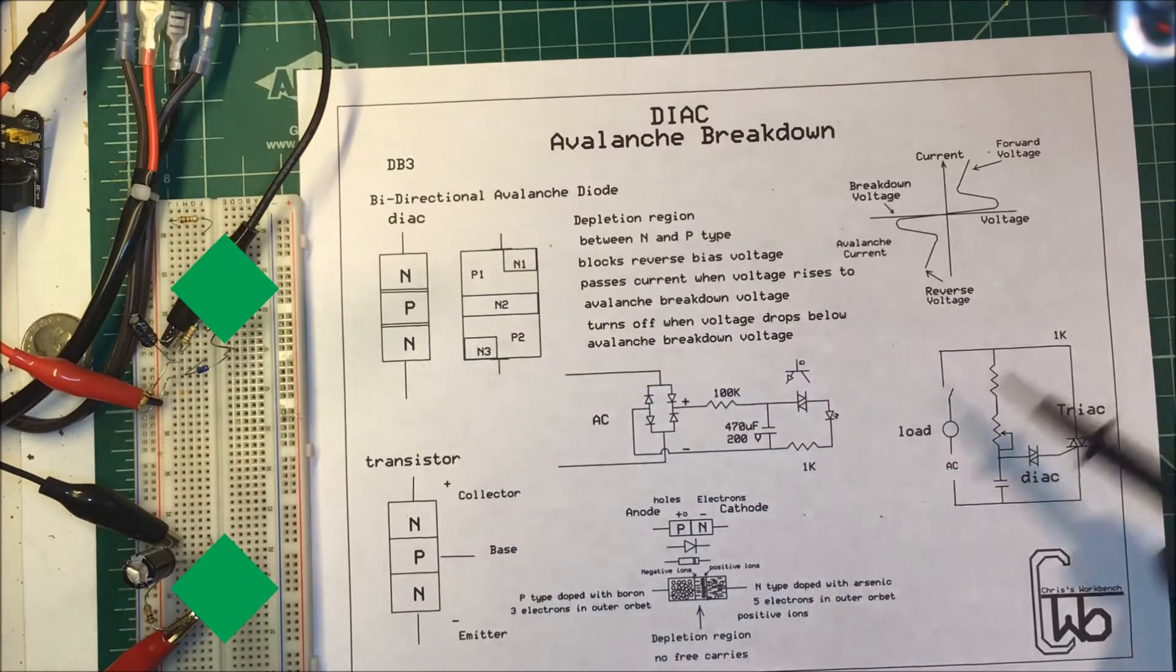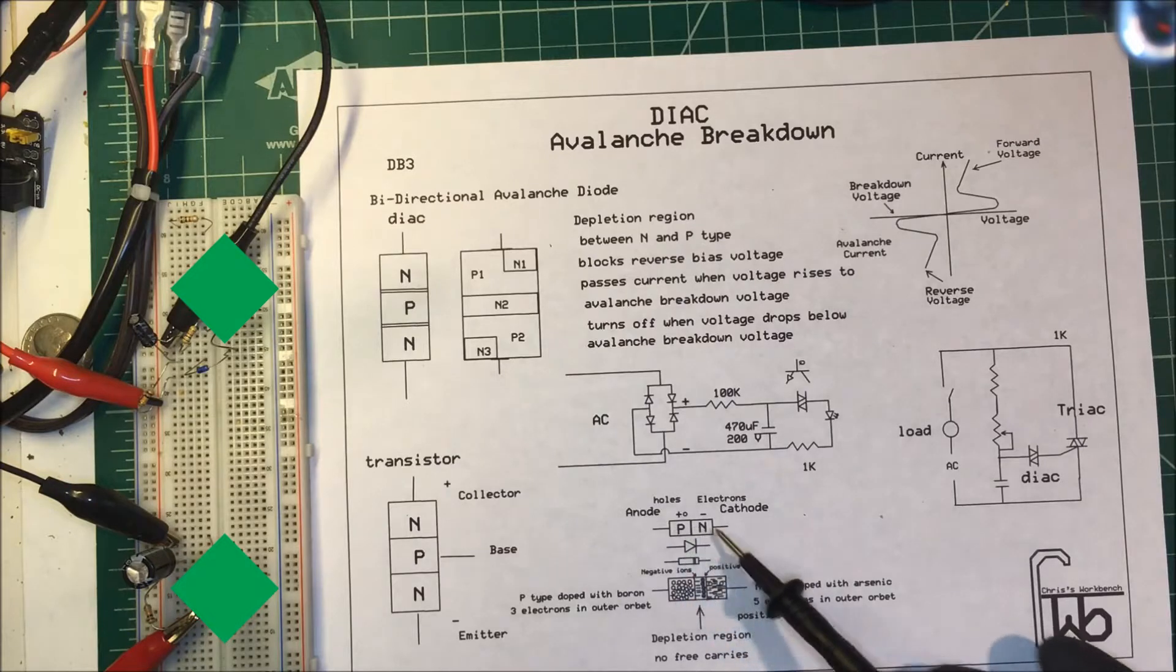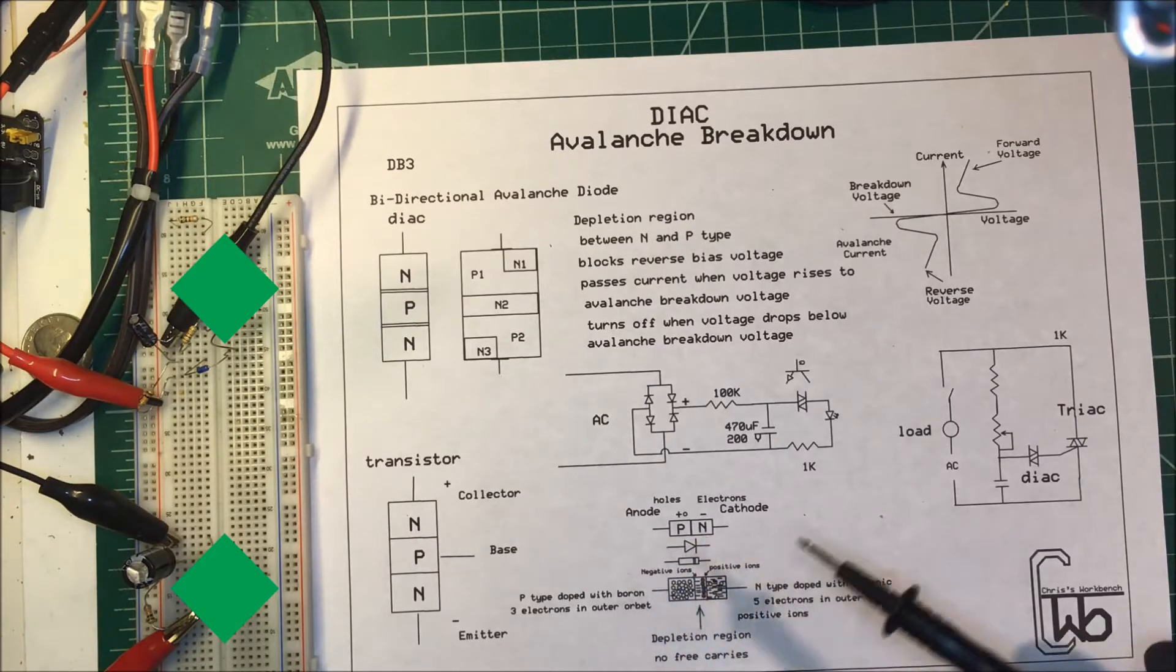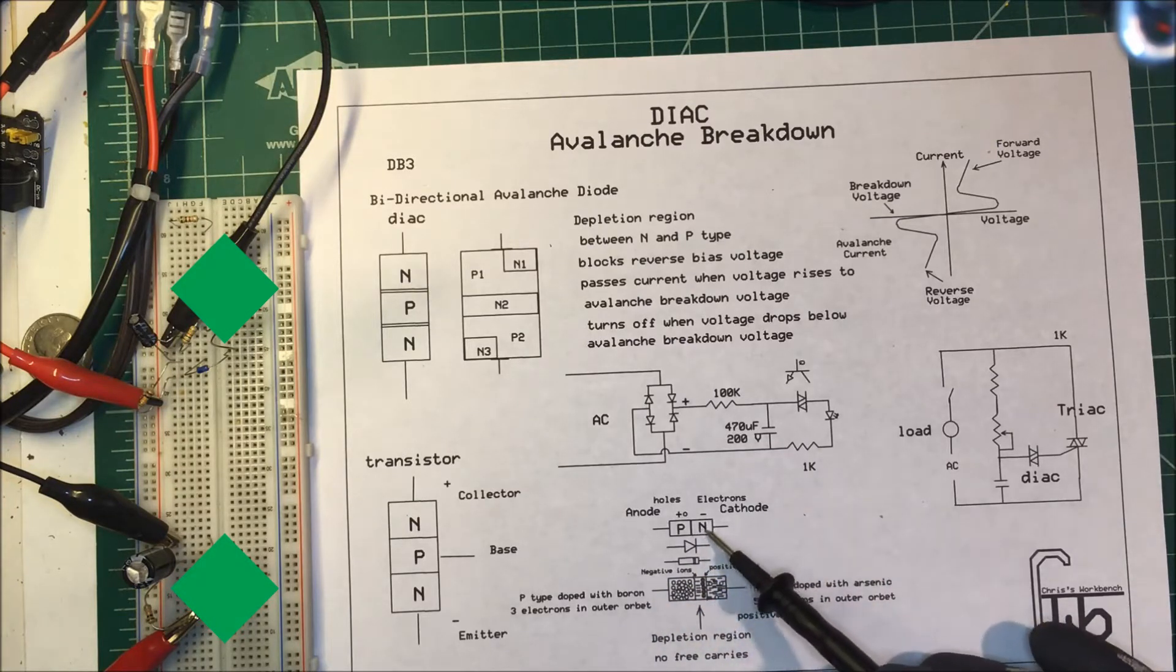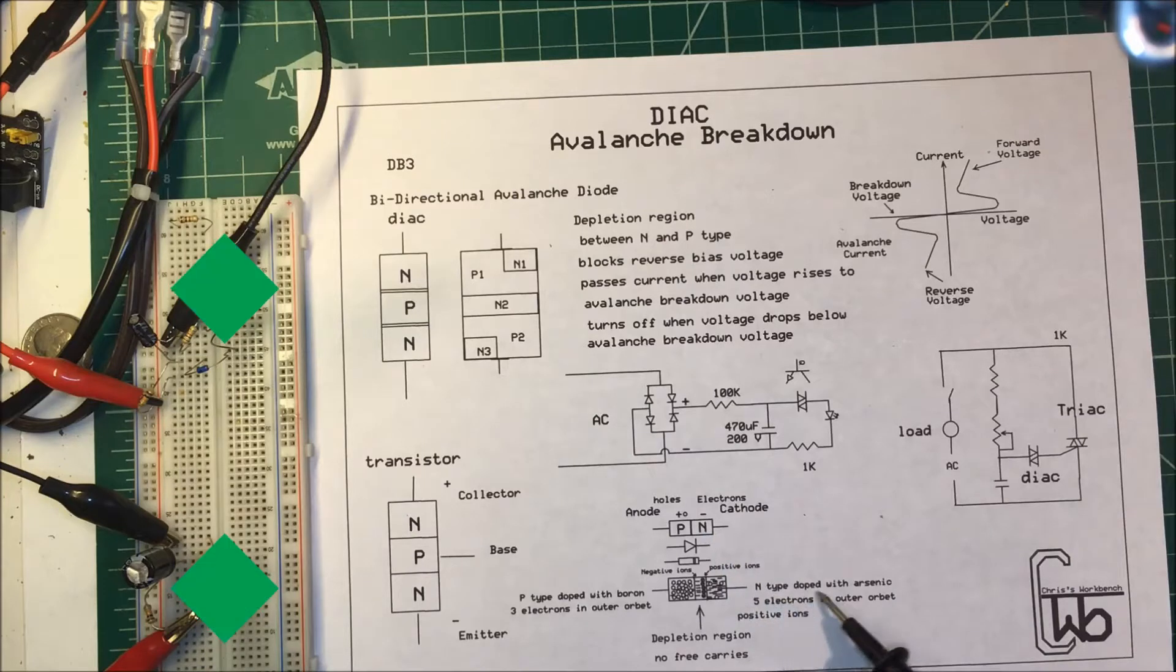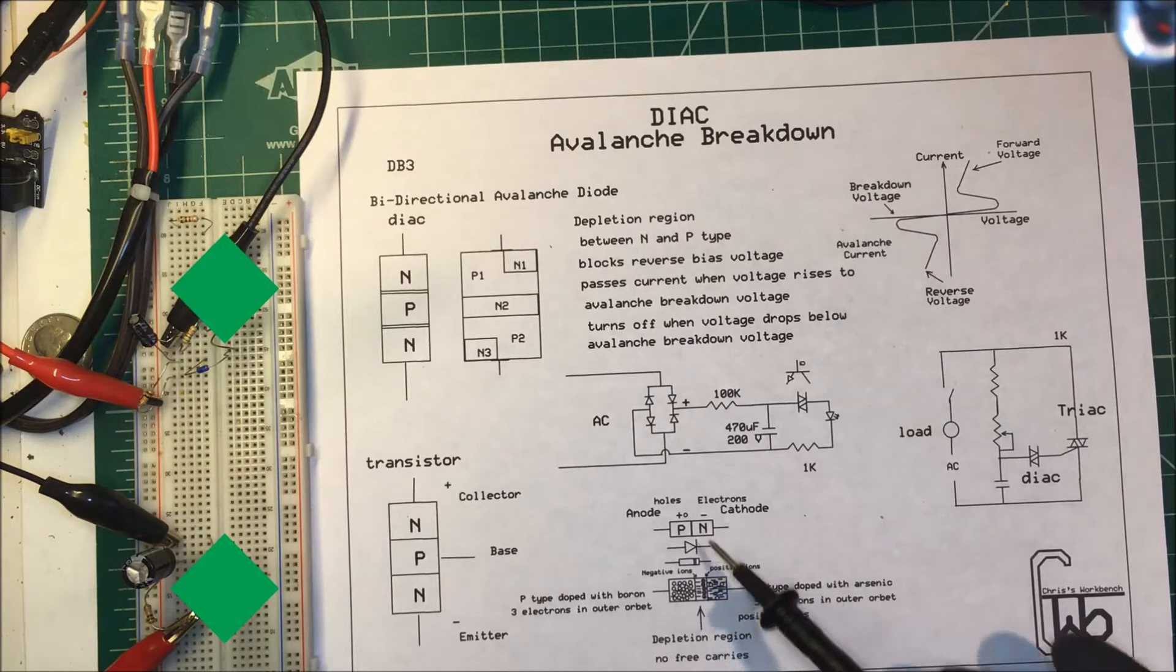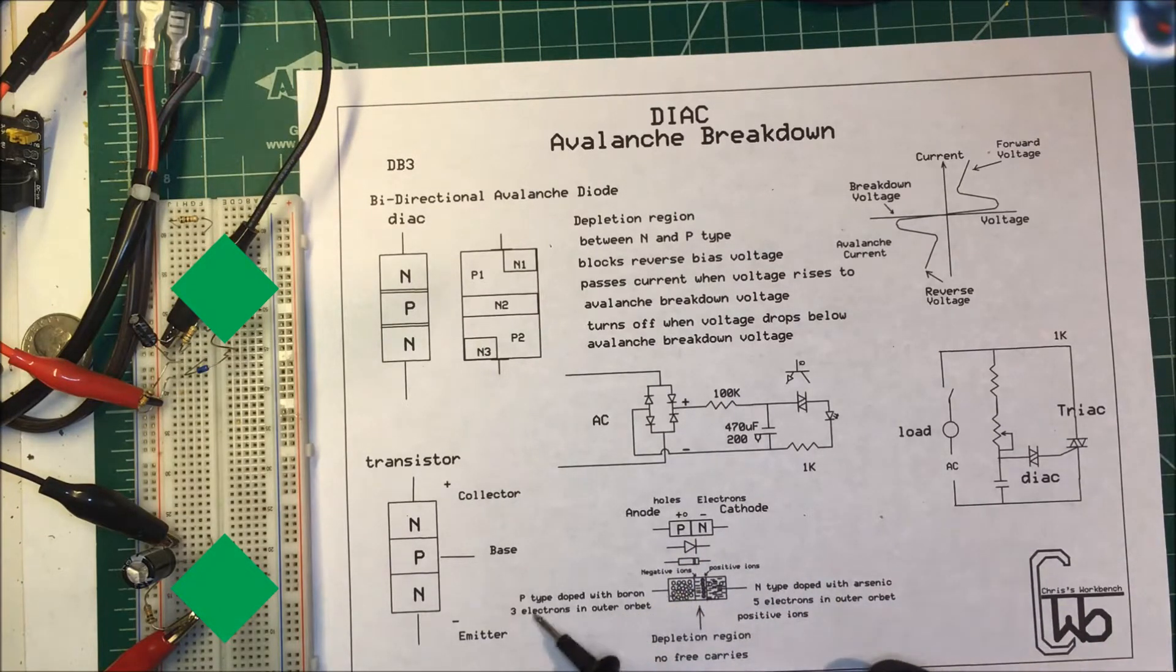We're concerned with the NP junction. Now for a silicon diode in the NP junction, the silicon has four electrons in the outer orbit and it likes to bond with other silicon atoms with four electrons. In this N material what they do is they'll dope it with something like arsenic that has five electrons in the outer orbit and it leaves extra electrons over here on the inside. On the P side over here they'll dope it with something like boron with three electrons in the outer orbit and that leaves what they call holes on this side.